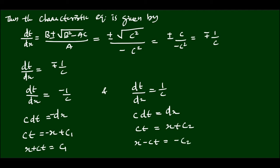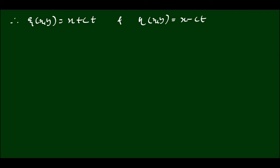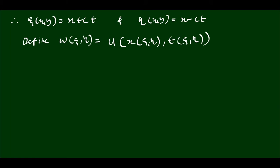So we have obtained the non-singular transformation. Zeta of (x, t) is x plus Ct, and eta of (x, t) is x minus Ct. Now define w(zeta, eta) equal to u(x(zeta, eta), T(zeta, eta)). So now we can convert the given one-dimensional wave equation, equation 1, into its canonical form.